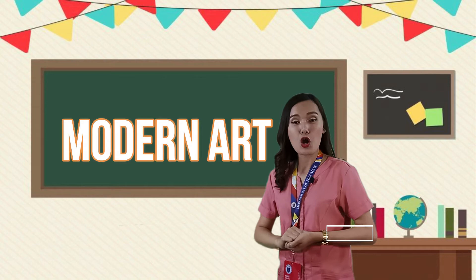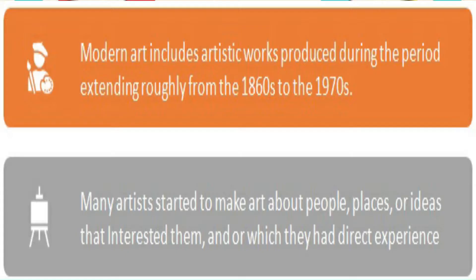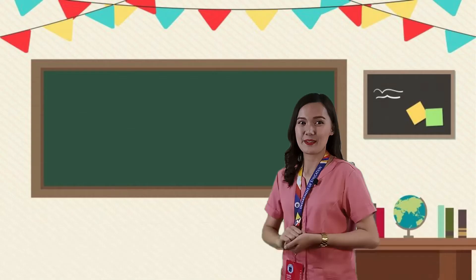What is modern art? Modern art includes artistic works produced during the period extending roughly from the 1860s to the 1970s. Many artists started to make art about people, places, or ideas that interested them, or that they wished they had the right to experience.